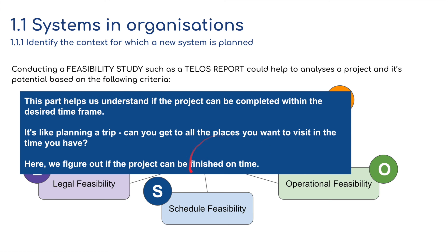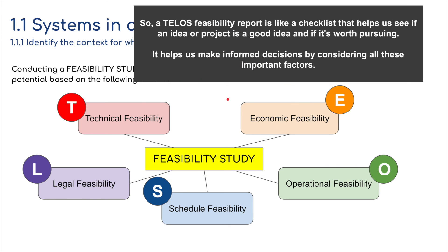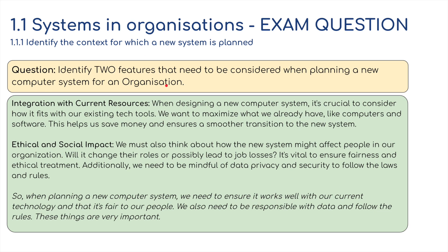We figure out if the project can be finished on time. That is an example of a feasibility study — basically a set of checklists asking: is the project worth doing considering these five factors? Now, here's an exam question from 1.1.1: identify two features that need to be considered when planning a new computer system for an organization.